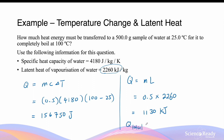To find the total energy, we add the two values together. The energy for raising the temperature is 156,750 joules, and the energy for the state change is 1130 kilojoules, which we convert to joules by multiplying by 1000. This gives a total answer of 1.29 times 10 to the power of 6 joules. This concludes the video on latent heat of state change.